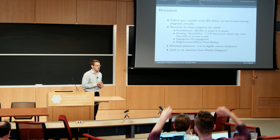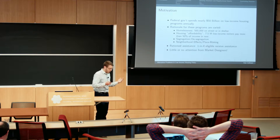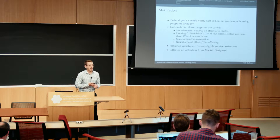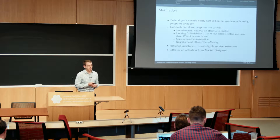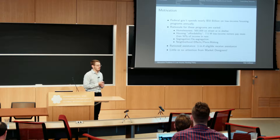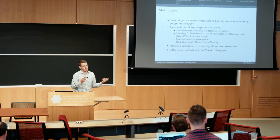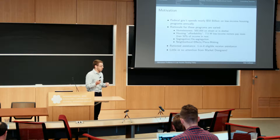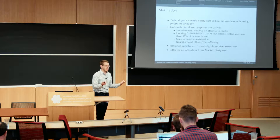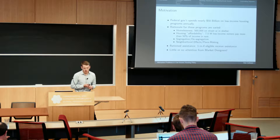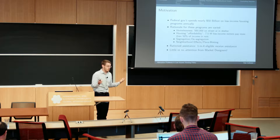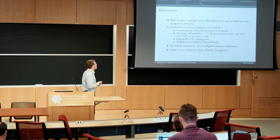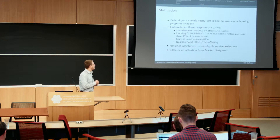Why do we care about low income housing generally? For one thing, the federal government spends a lot of money on it — about $50 billion a year. About $20 billion of that is for housing vouchers, close to $10 billion each in public housing and a program called Project Based Section 8, and another $7 or $8 billion in a program called the Low Income Housing Tax Credit. So it makes up a substantial portion of discretionary spending and it's an important part of the safety net.